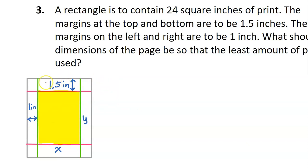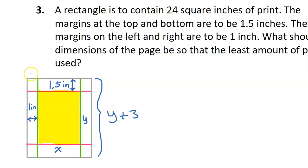We are going to need expressions for the dimensions of the actual paper in terms of X and Y. For the vertical dimension, we have Y plus an extra 1.5 inches at the top and bottom, so 1.5 plus 1.5 equals 3. The total height of the paper is Y plus 3. Similarly, the width is X plus 1 inch on each side for a total of 2, so the width of the paper is X plus 2.